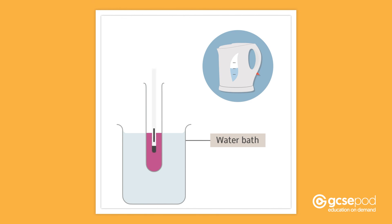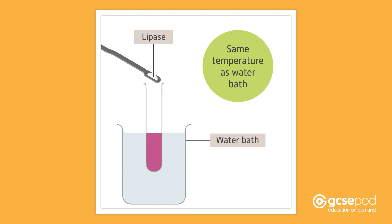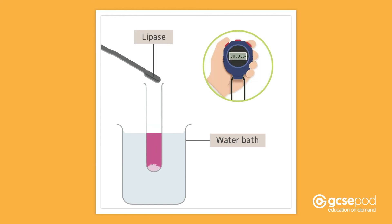Example temperatures could be 5, 10, 20, 30, and 40 degrees Celsius. When the contents of the boiling tube reach the same temperature as the water bath, add lipase to the milk and start a timer. Time how long it takes for the indicator in the milk to turn yellow.